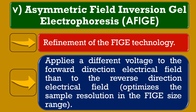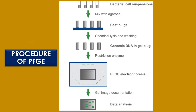Procedure of pulsed field gel electrophoresis: First, standardized bacterial culture suspensions of investigated isolates are embedded in agarose to enhance DNA stability during the procedure. Then, bacterial cells are lysed with the help of restriction enzymes and large fragments of the bacterial chromosomes are generated by macro restriction analysis.